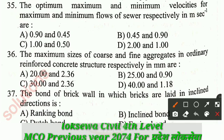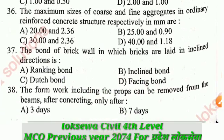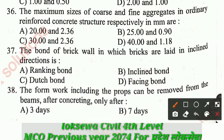Question number 35: The optimum, maximum, and minimum velocities for maximum and minimum flow of sewer respectively in metres per second. The correct answer is: optimum velocity 0.9 m/s and minimum velocity 0.45 m/s.